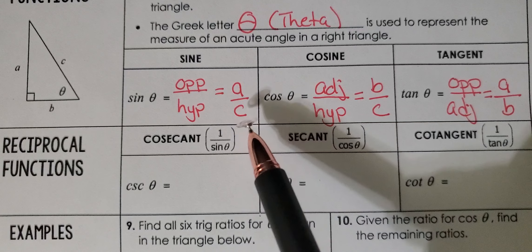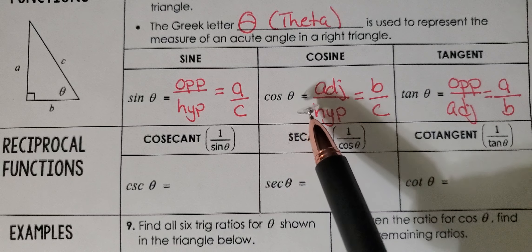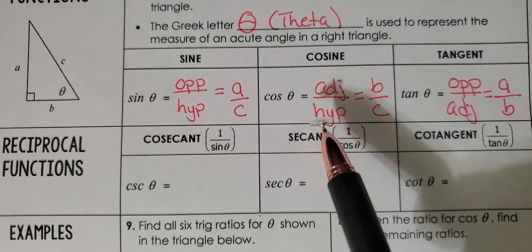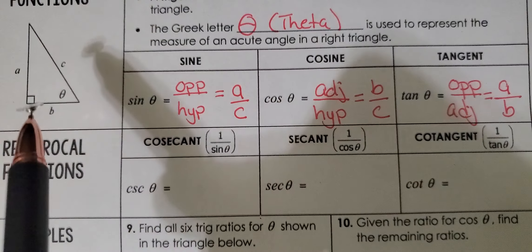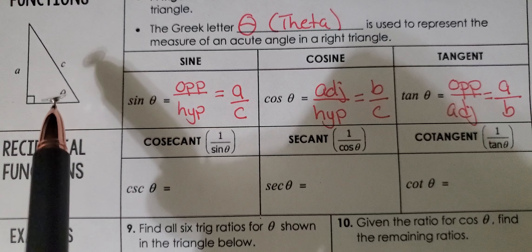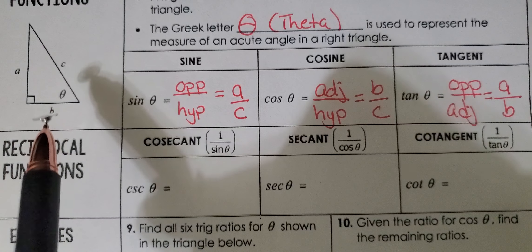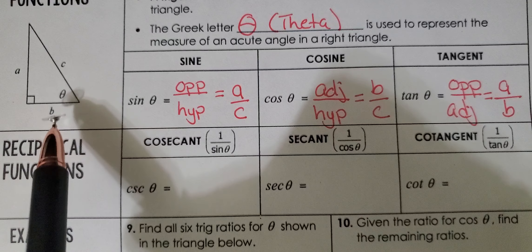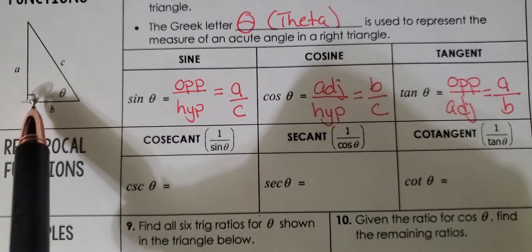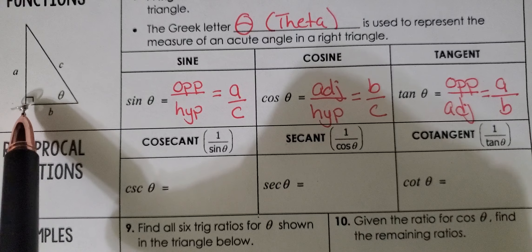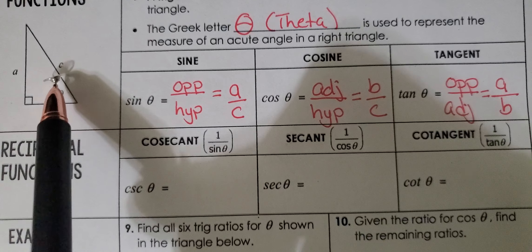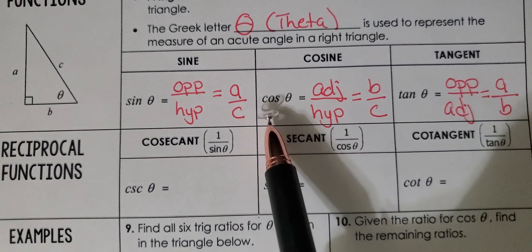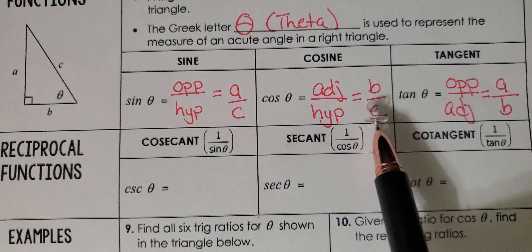Likewise, cosine theta is going to be equal to the adjacent side over the hypotenuse. If we go to angle theta, the adjacent leg is the leg that makes up that angle, which is labeled B, over the hypotenuse. The hypotenuse is the side diagonally across from the right angle, so C is the hypotenuse. Cosine theta equals B over C.